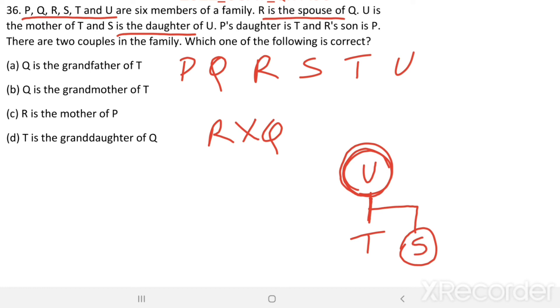P's daughter is T. So, P's daughter is T. That means P is husband of U. R's son is P. Here, you can say, R's son is P. Therefore, R and Q are parents of P.